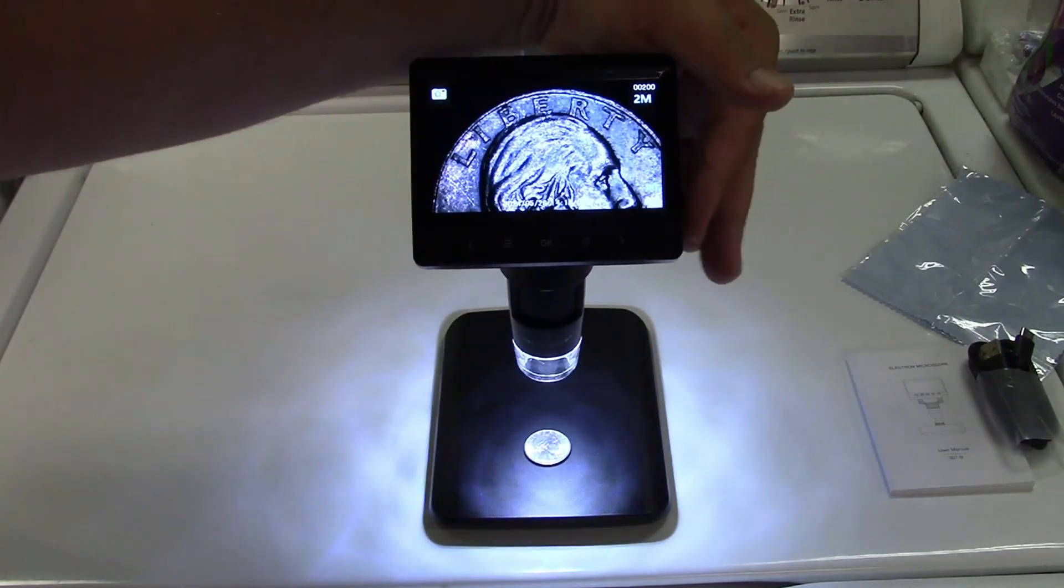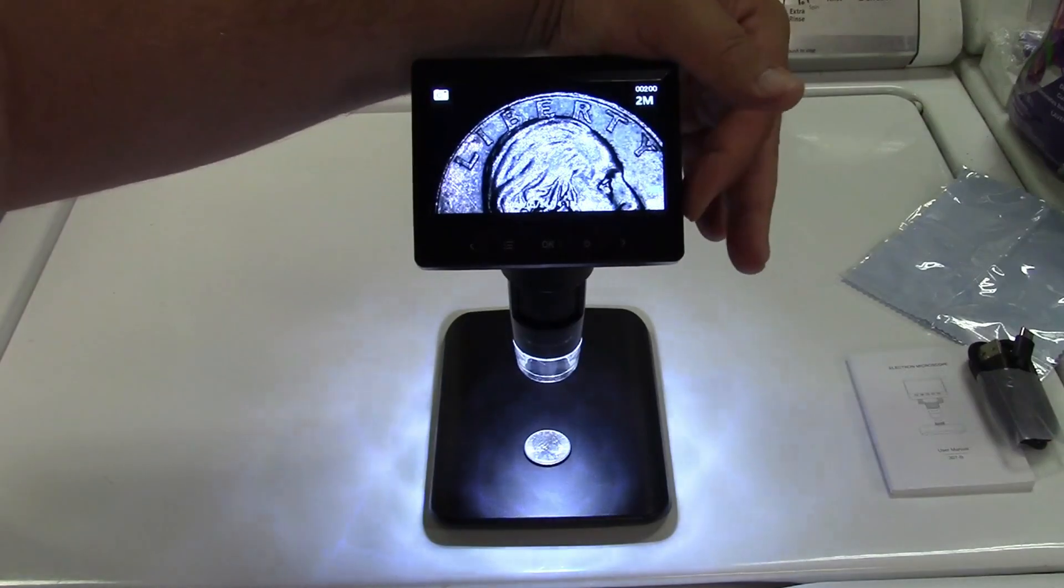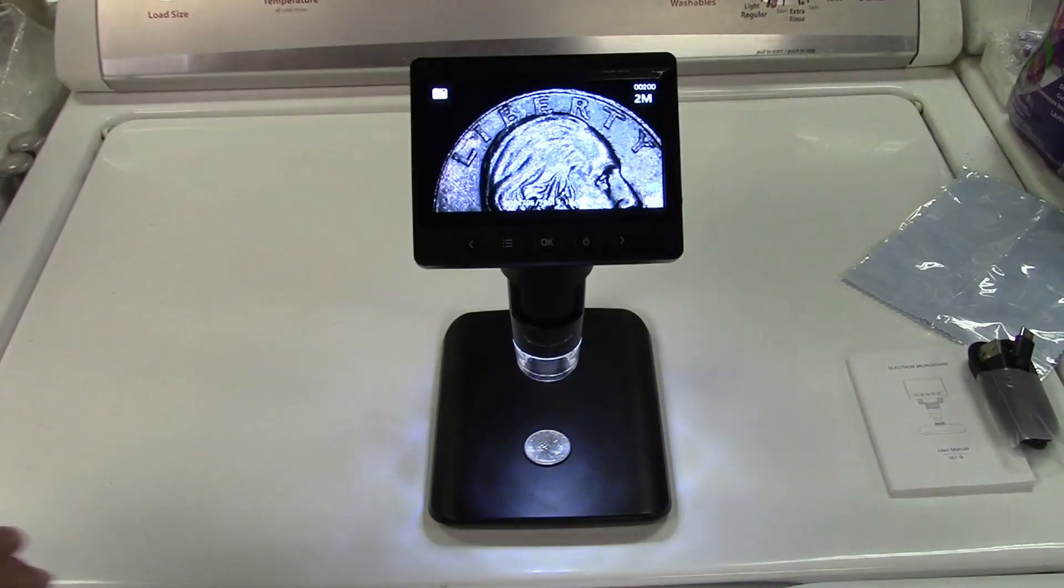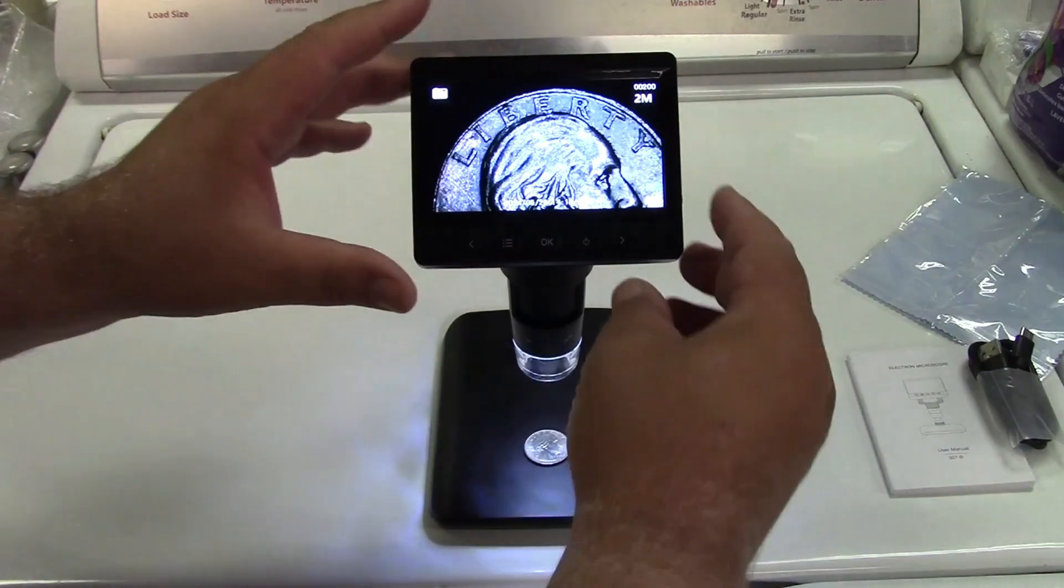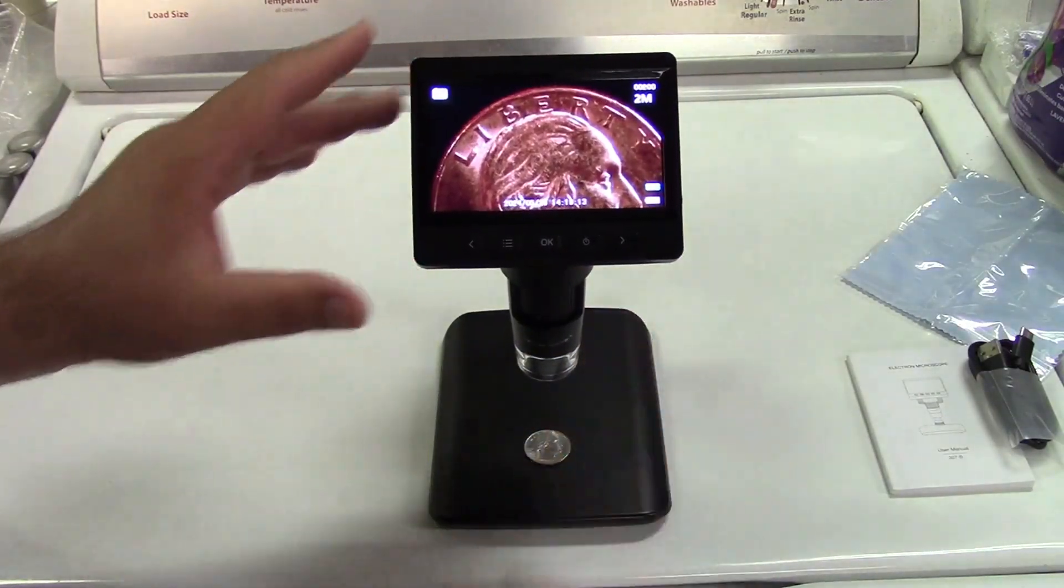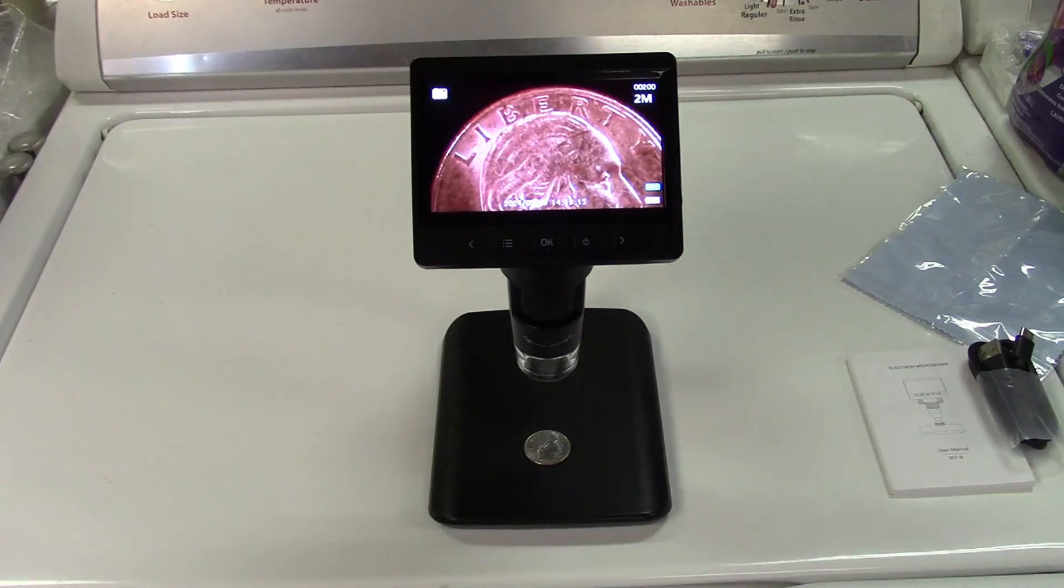We can adjust the brightness. The microscope compensates for that. But you don't need it at the highest brightness to see it. In fact, you could shut it completely and that's just with the room lights right there.